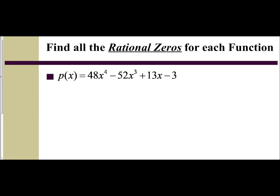In this video, we are going to find all the rational zeros of a polynomial function. To do this, we're going to have to apply our rational zero theorem to make a list of all the possible rational zeros first. In one of the previous videos, we looked at the possible rational zeros — the p over q list — and what we're going to do is use that list to find out which ones are actual rational zeros.